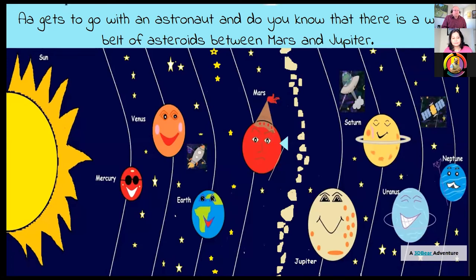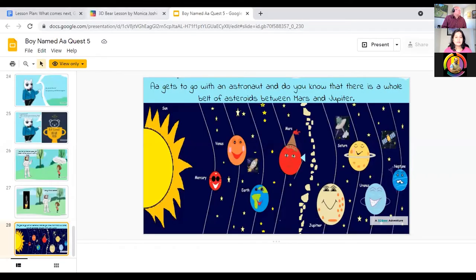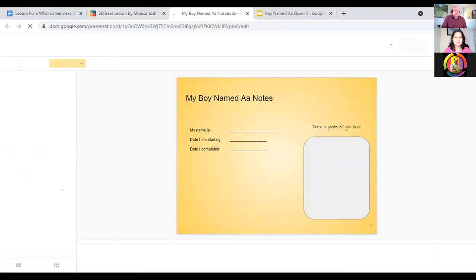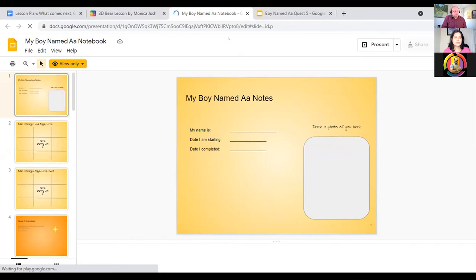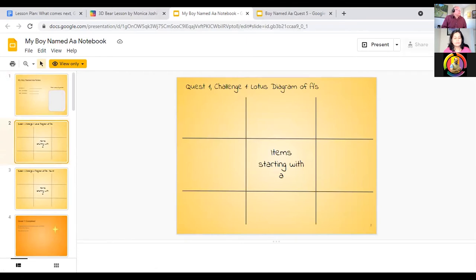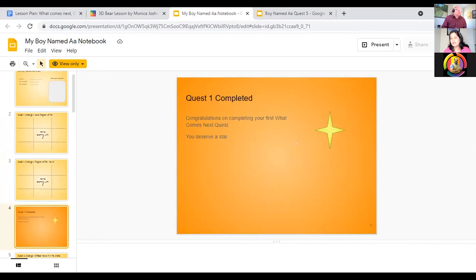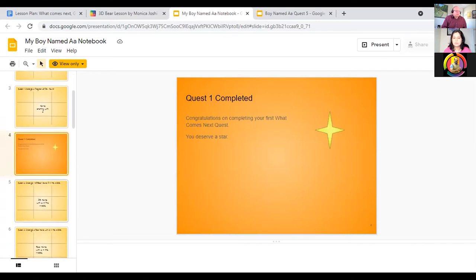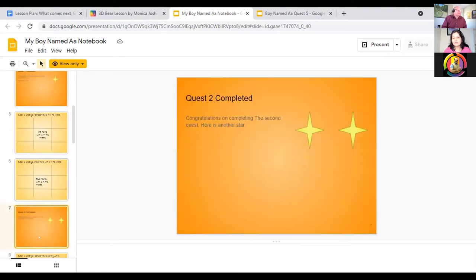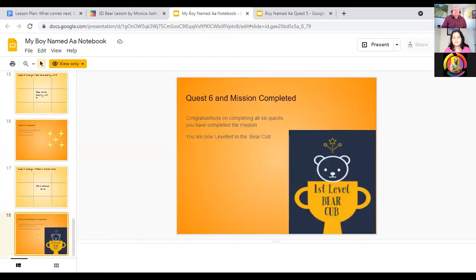Let me show you the master notebook. This is the notebook the student has to use for the lotus diagram. Each quest has to be added here in the form of a lotus diagram — this is the first quest, second quest — and after that, a star is added. You can also have a digital board. This is the complete package which you can download and give to your students for use in your classroom. And this is the final bear cub, which is given to the student when they complete all the challenges.